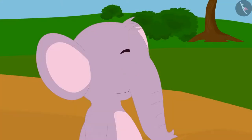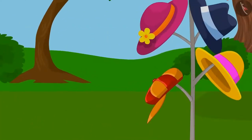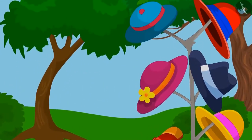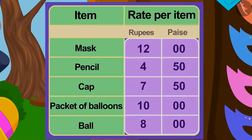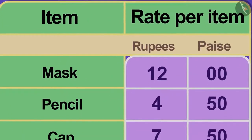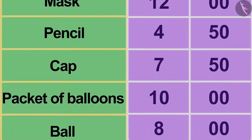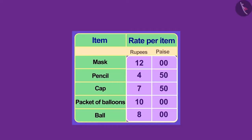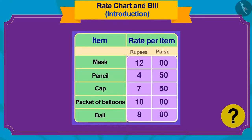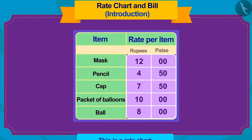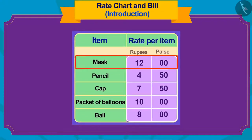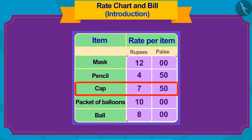Now, Appu saw a beautiful cap on Banni's stall. He saw one such board next to the cap. The price of each item available at Banni's stall was written on the board. Children, have you seen any such board in a shop? This is a rate chart. We can see the price of one piece of each item.